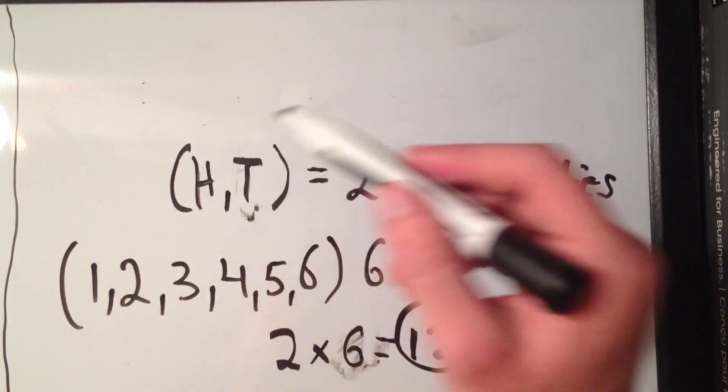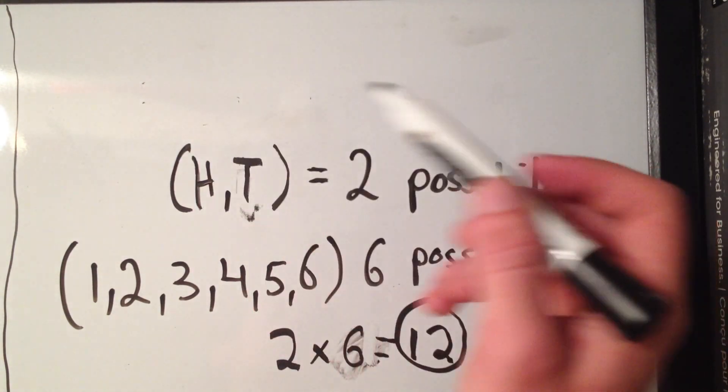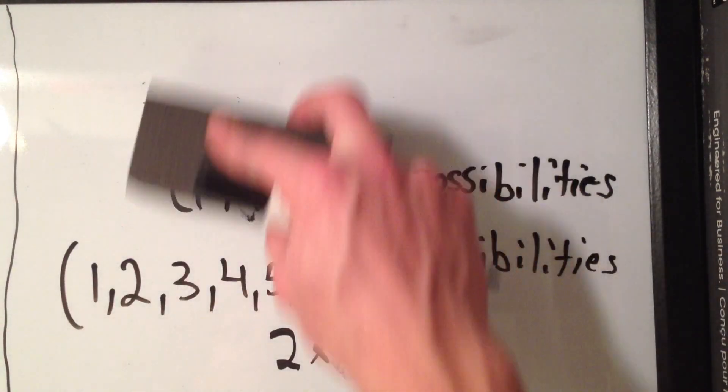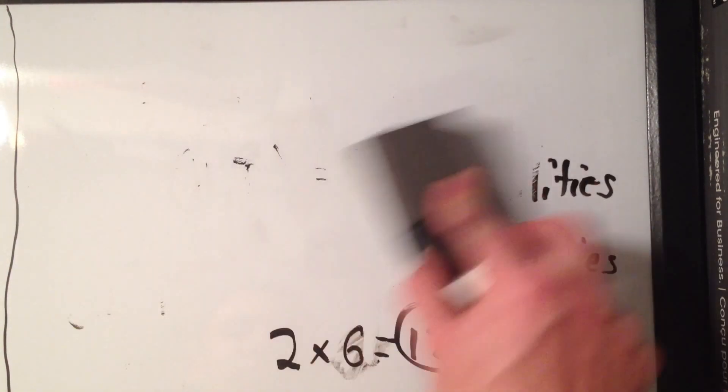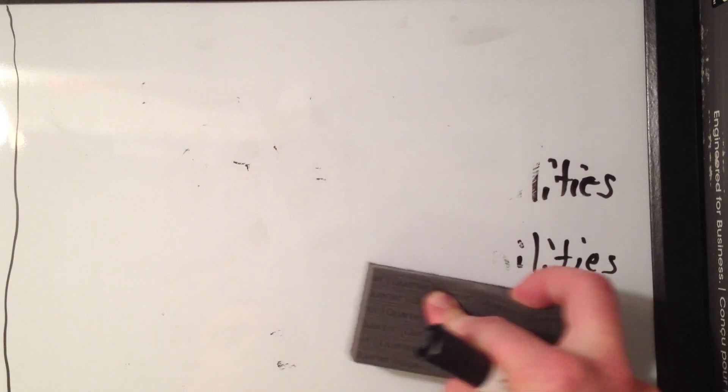Heads and one, heads and two, heads and three, heads and four, tails, and so on. So this can be generalized. And this is what we call the basic principle of counting.